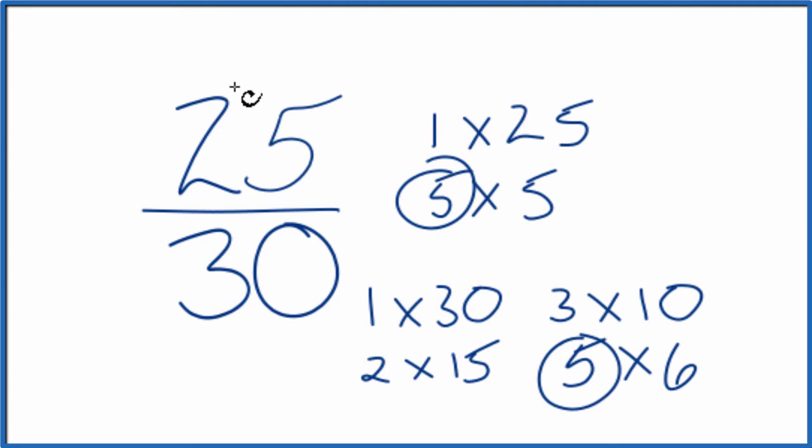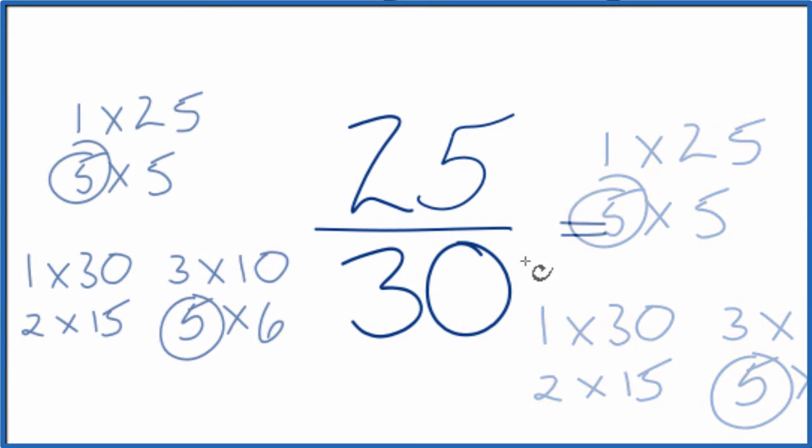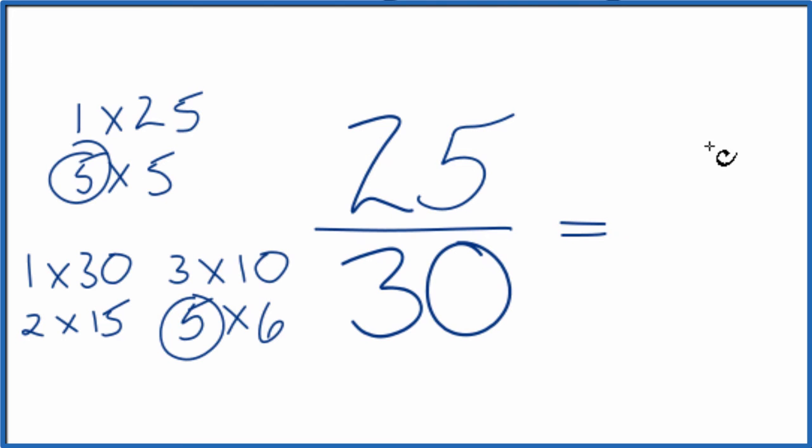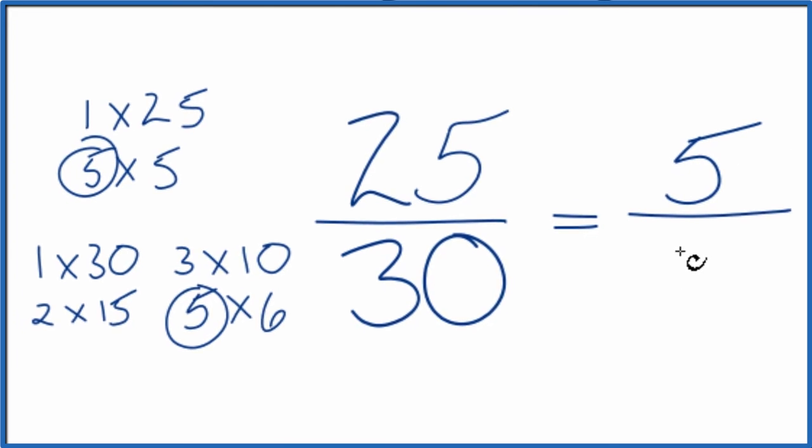So we'll divide 25 by five, then 30 by five, and we'll have simplified 25 over 30. Let's move these over here. So 25 divided by five, that gives us five. And then 30 divided by five gives us six.